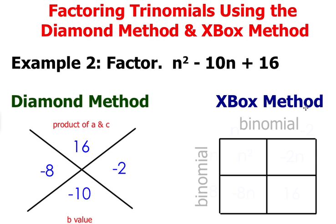So now let's go to the XBox method and set up your 2 by 2 box. In the upper left corner, you're going to write the n² term. In the lower right corner, you're going to write your c value, which is 16.